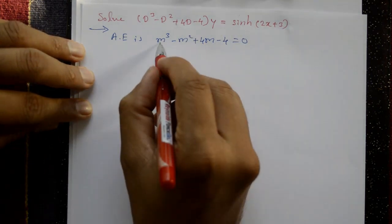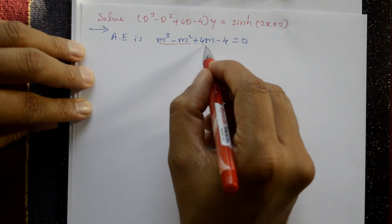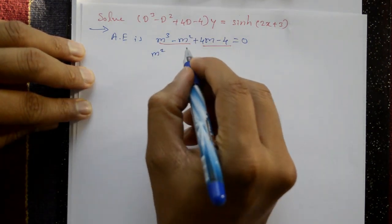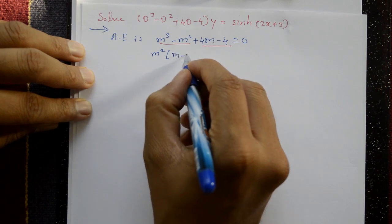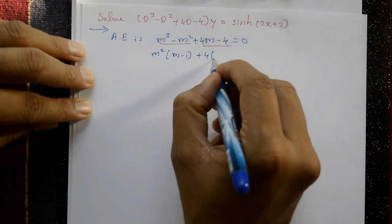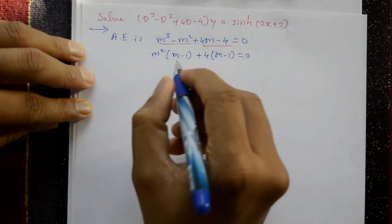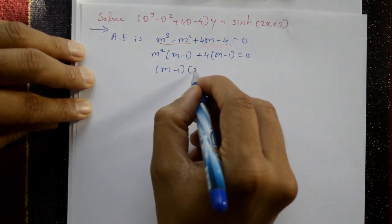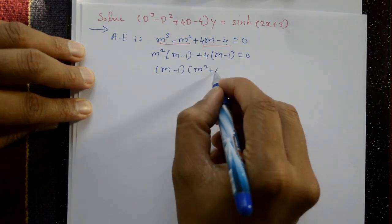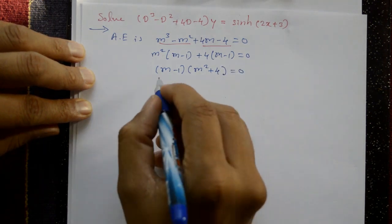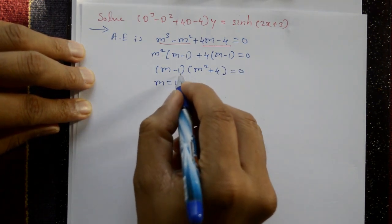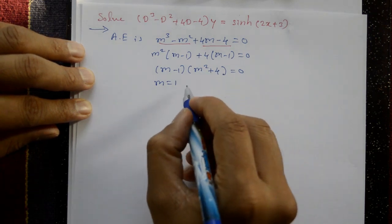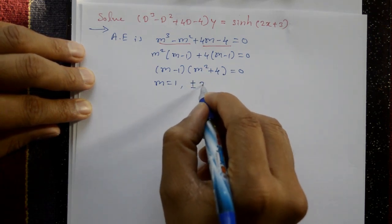Taking common factors: m²(m - 1) + 4(m - 1) = 0, so (m - 1)(m² + 4) = 0. This gives m = 1 and m² = -4, so m = ±2i.